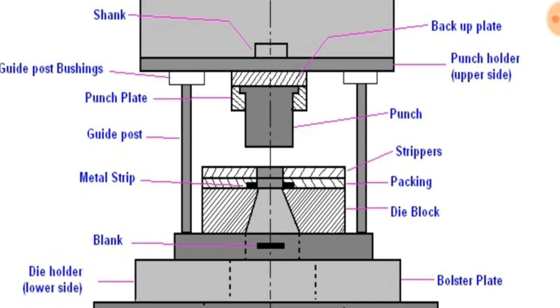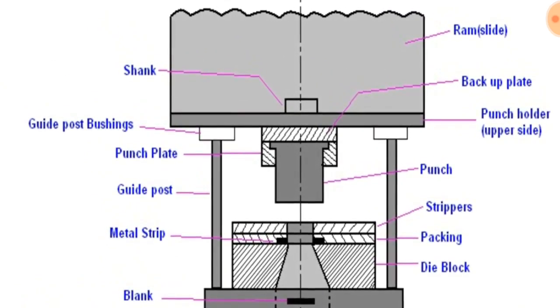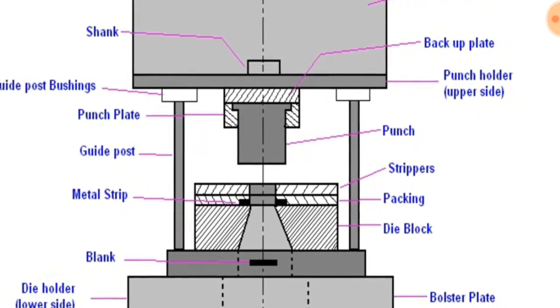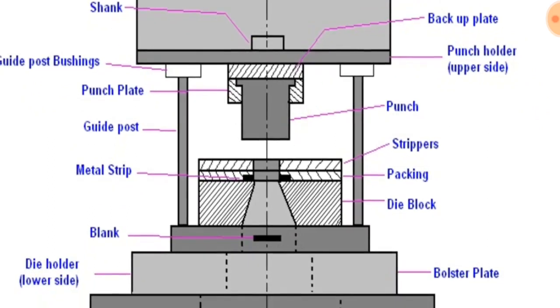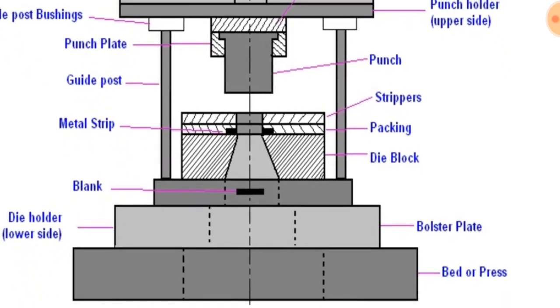Pitman: Pitman is a connecting rod which is used to transmit motion from the main drive shaft to the press slide. Shut height: shut height is the distance from the top of the bed to the bottom of the slide with its stroke down and adjustment up.